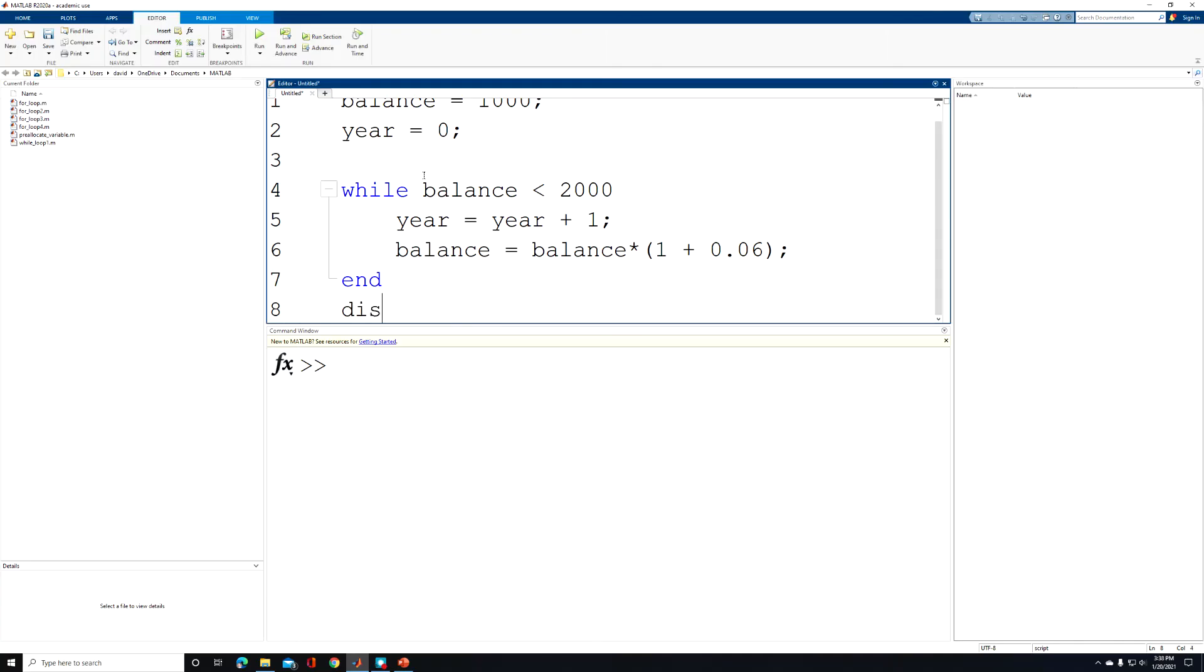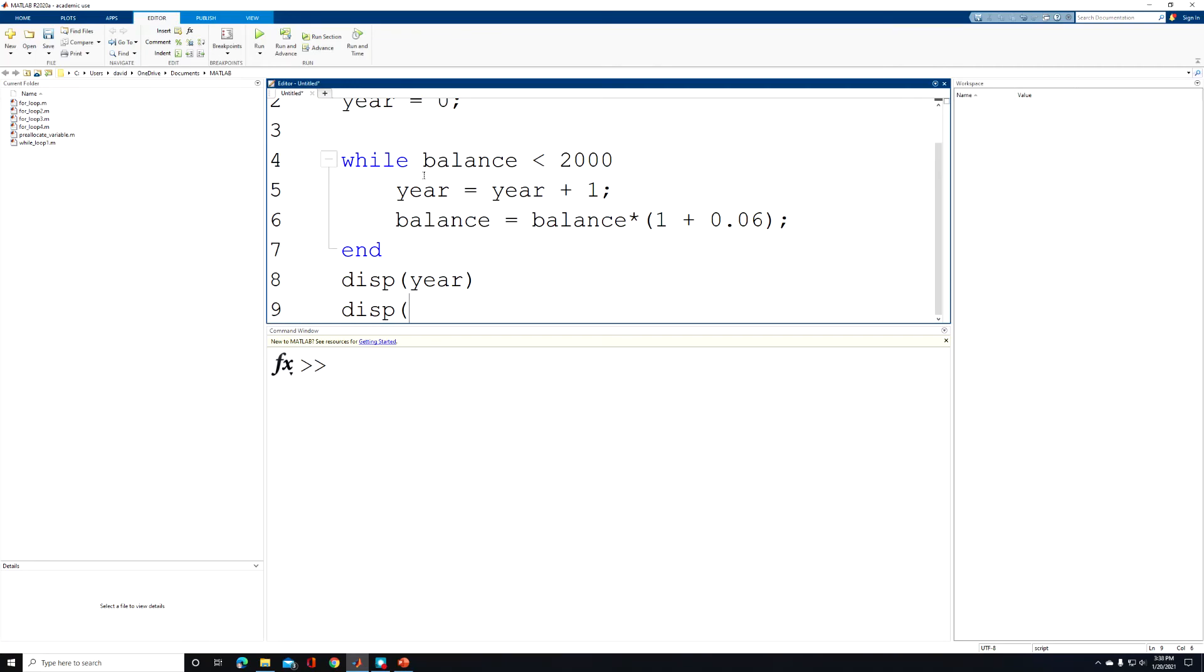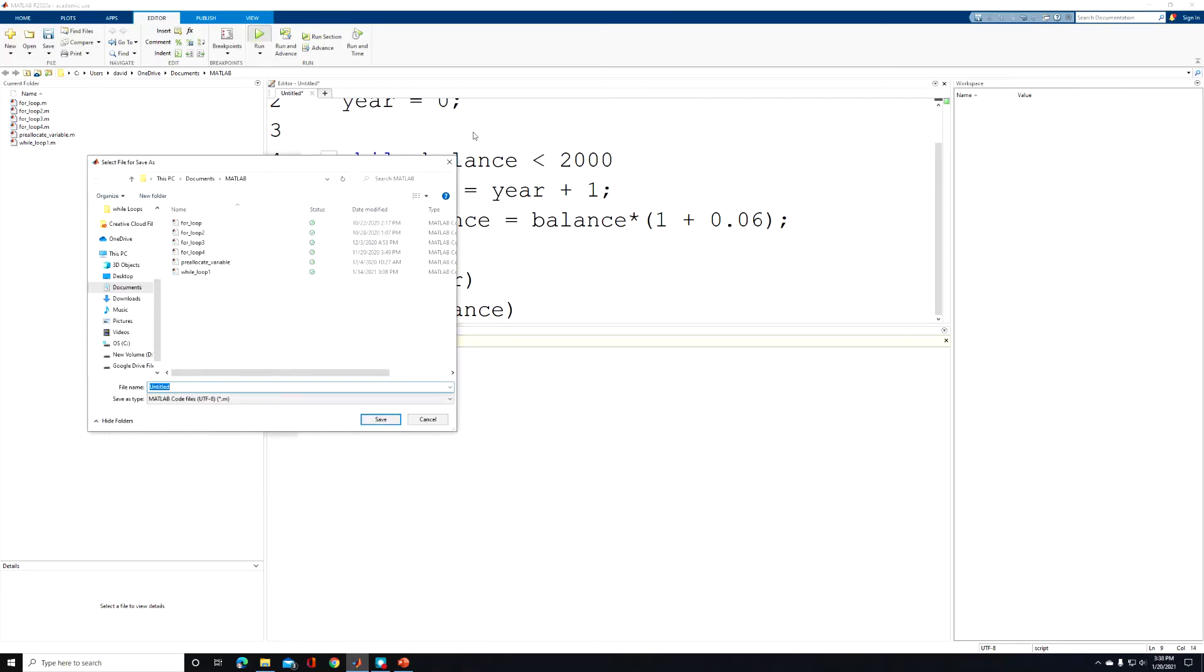So I'm going to display the year and display the balance. And then we'll go up to our editor tab and click save and run and give this a file name.